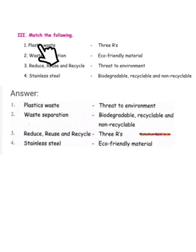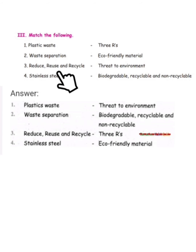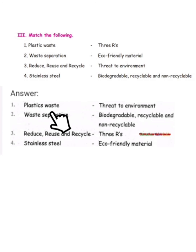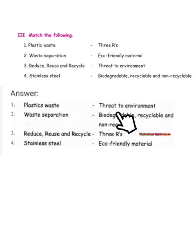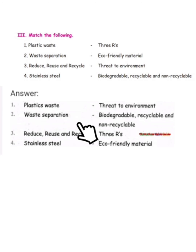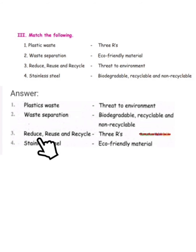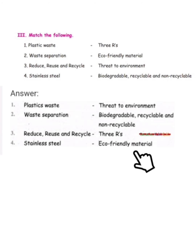Next, Roman numeral III — match the following. Items to match: plastic waste, waste separation, reduce/reuse/recycle, and stainless steel. Plastic waste matches with: threat to environment. Waste separation matches with: biodegradable, recyclable and non-recyclable. Reduce, reuse and recycle matches with: the three R's. Stainless steel matches with: eco-friendly material.